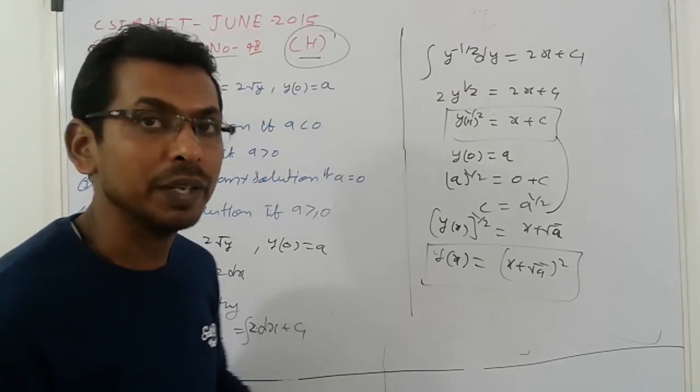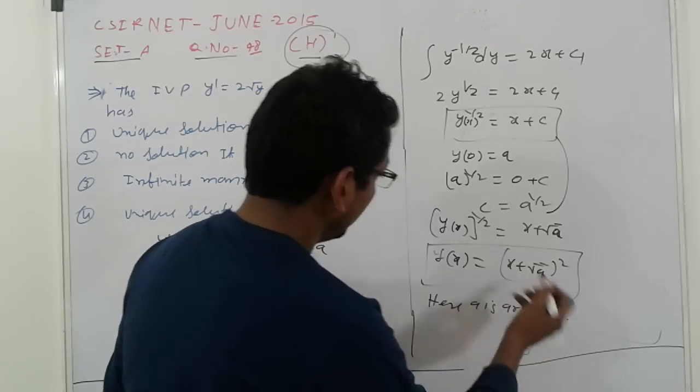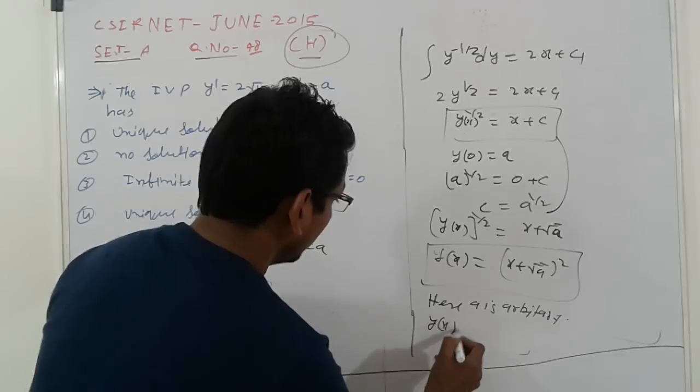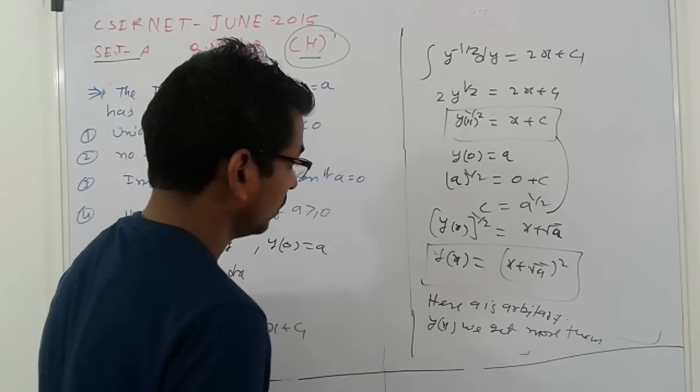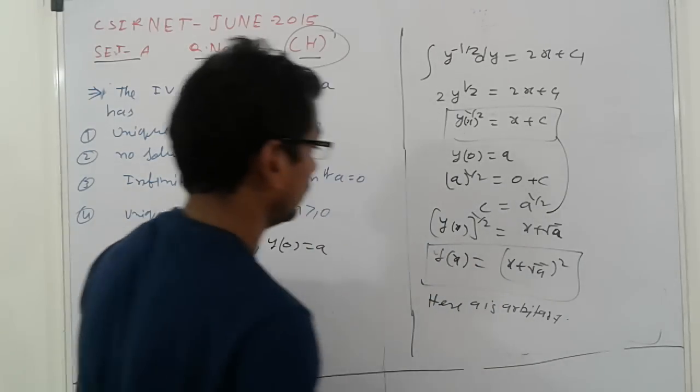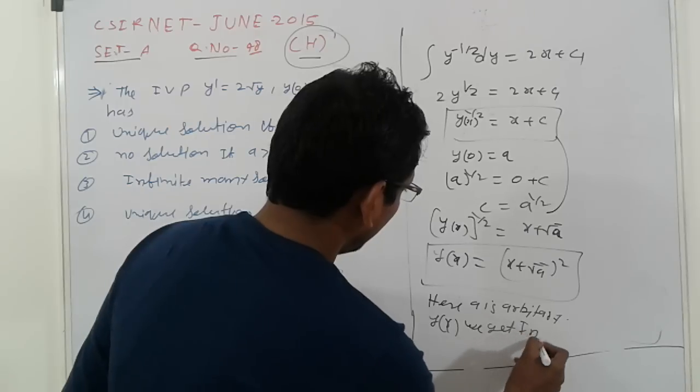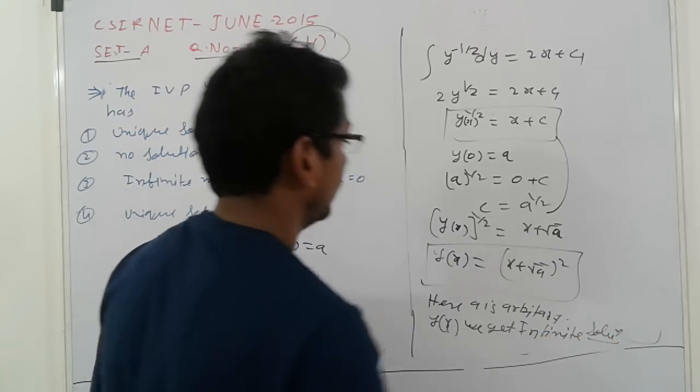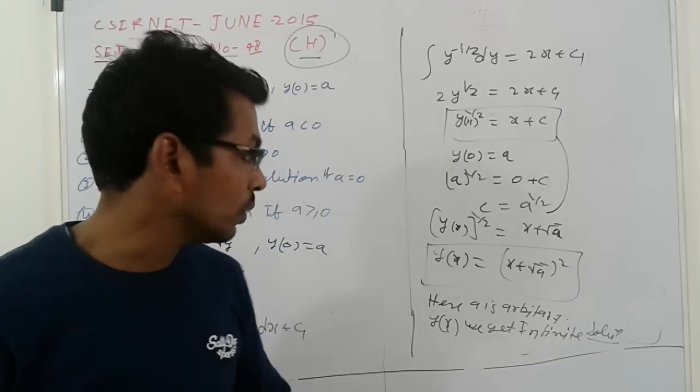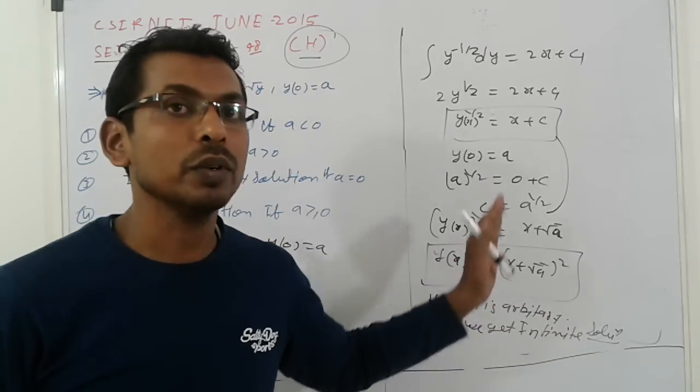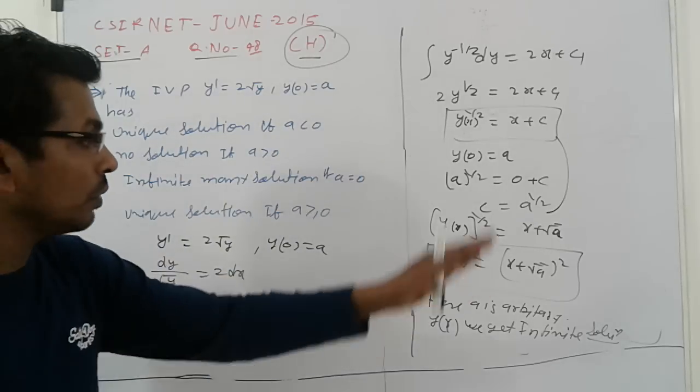Where a is arbitrary. Since a is arbitrary, it means y(x) gives us infinite solutions because the constant value is not fixed. We don't know what is the value of the constant, so you cannot decide if it's a unique solution or no solution, but we get infinite solutions.